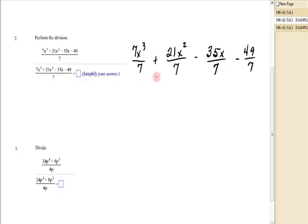What will that give me? Well, I'm just going to be dividing the numerical coefficients. So I'm going to end up with x to the 3rd, implied 1x to the 3rd, plus 3x squared minus 5x minus 7. And that's my quotient.